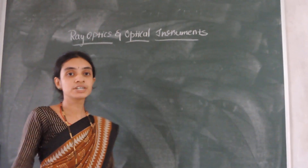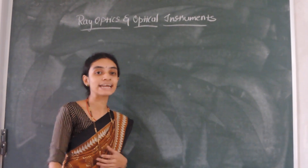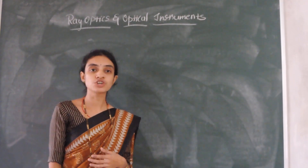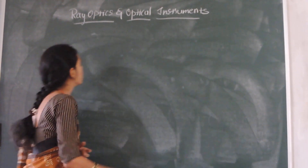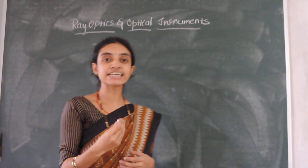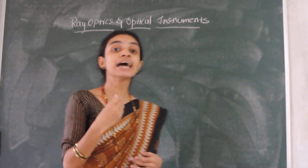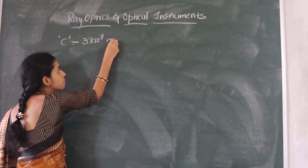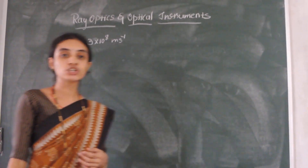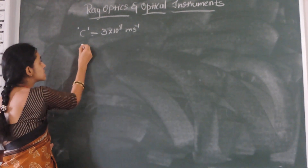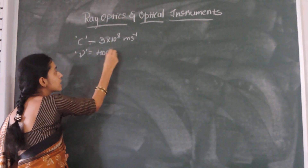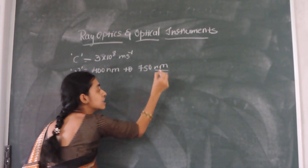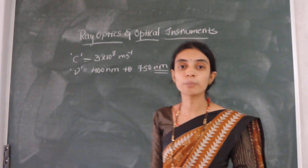When you see the term optics, what comes to mind? Something related to light. Light is a form of energy. Because of the presence of light, we can visualize the things around us. Light travels with a speed of 3×10⁸ meters per second — that is the speed of light in air or vacuum. The wavelength ranges from 400 nanometers to 750 nanometers, which comes under the visible region of the electromagnetic spectrum.